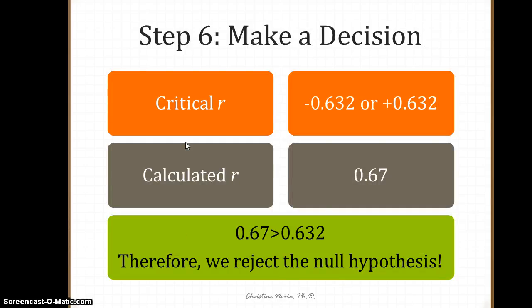Finally, we make a decision. Our critical values are plus or minus 0.632, and our calculated r is 0.67. Because our calculated r is greater than 0.632, we reject the null hypothesis and conclude there is a significant correlation.